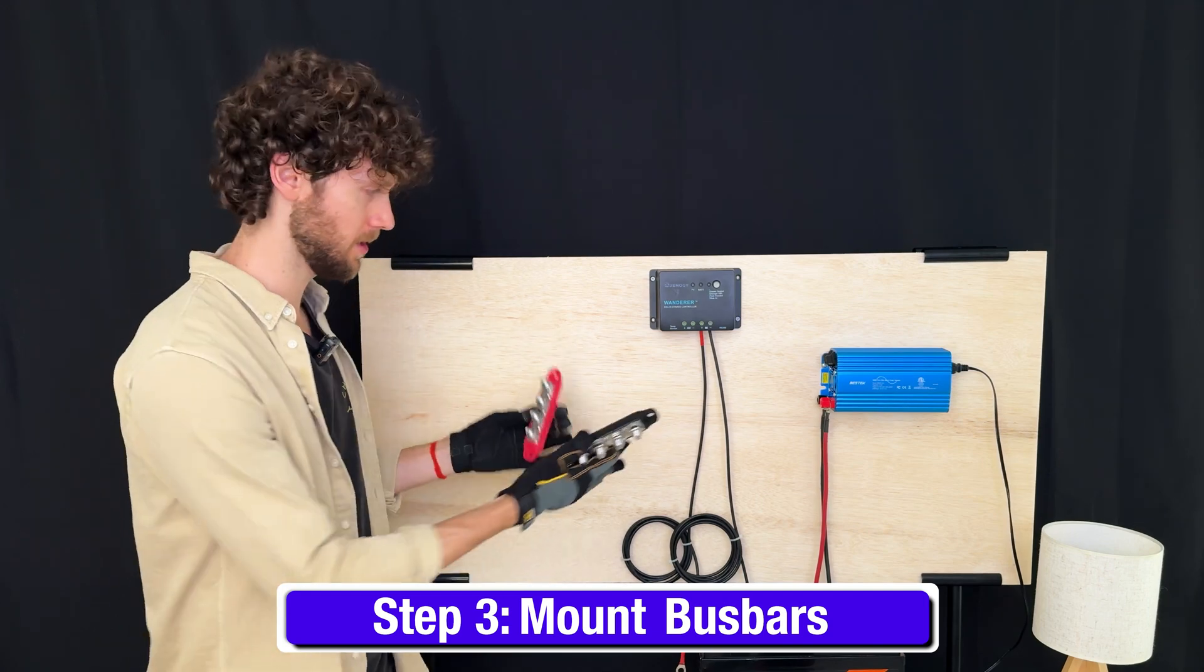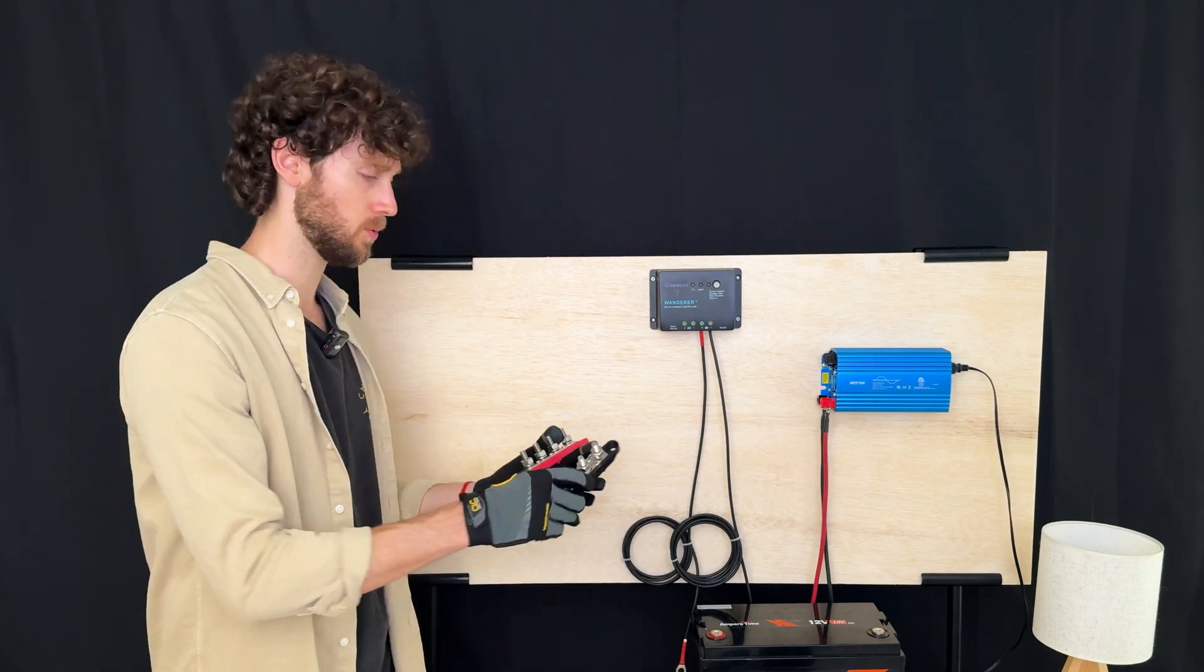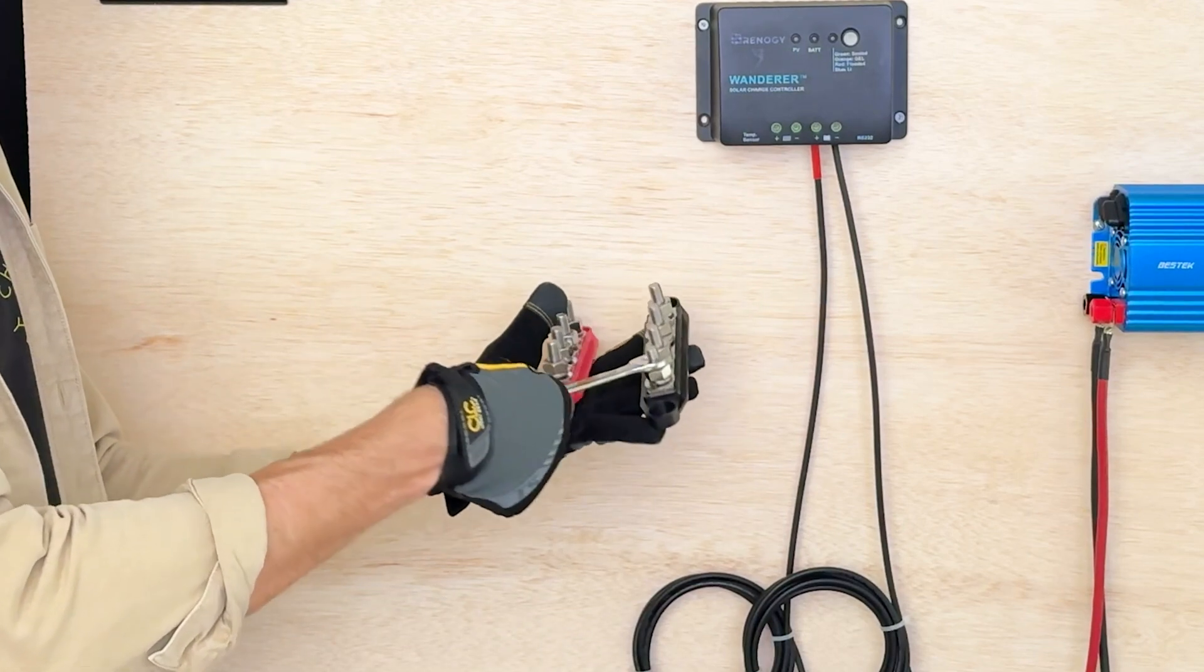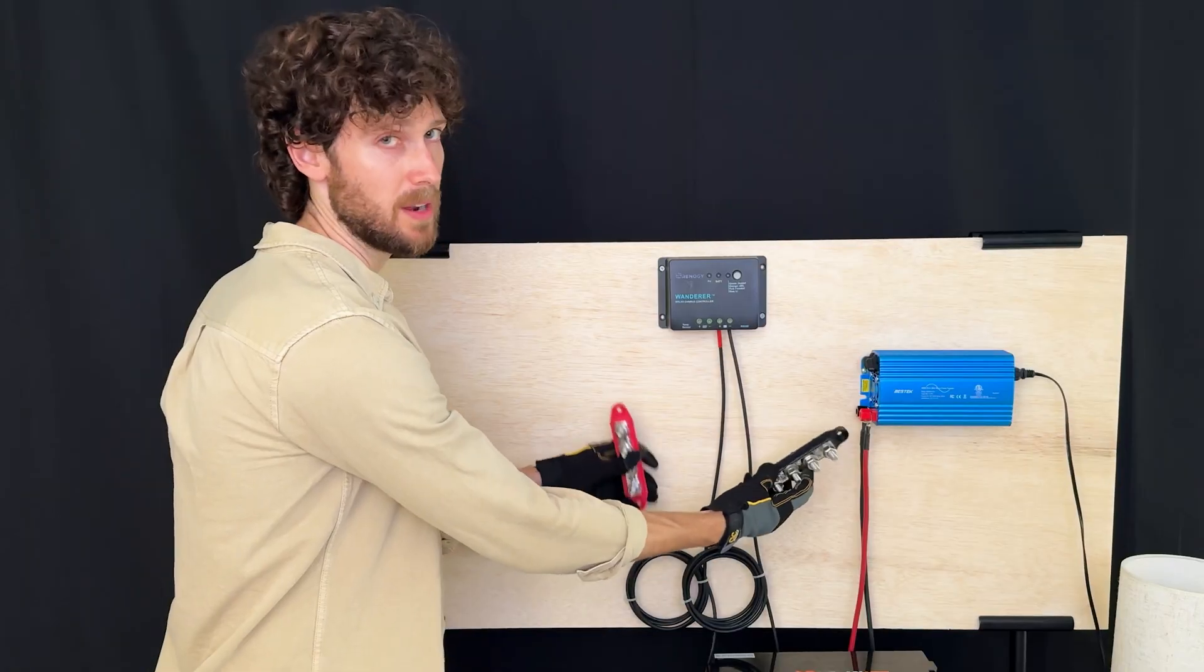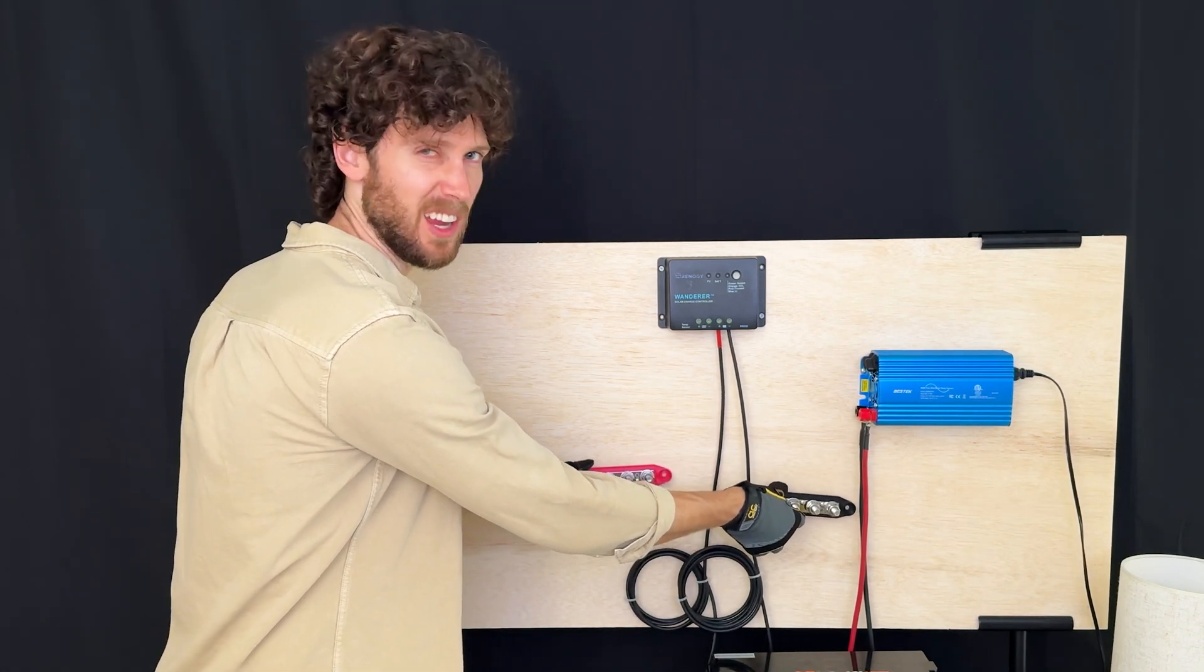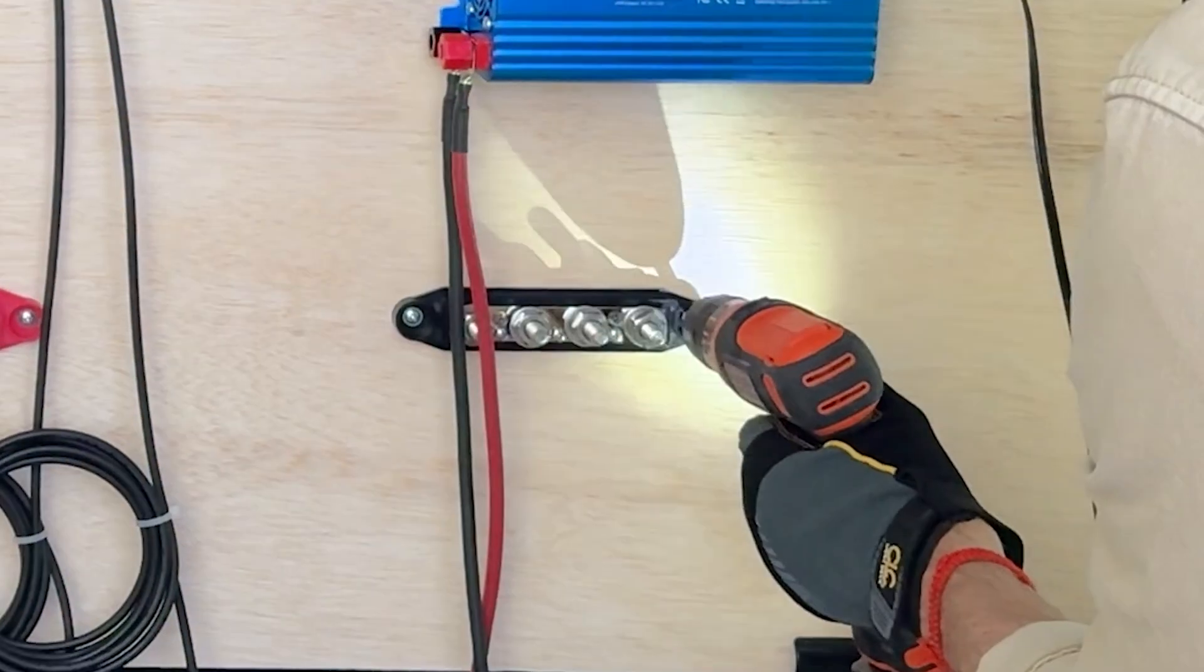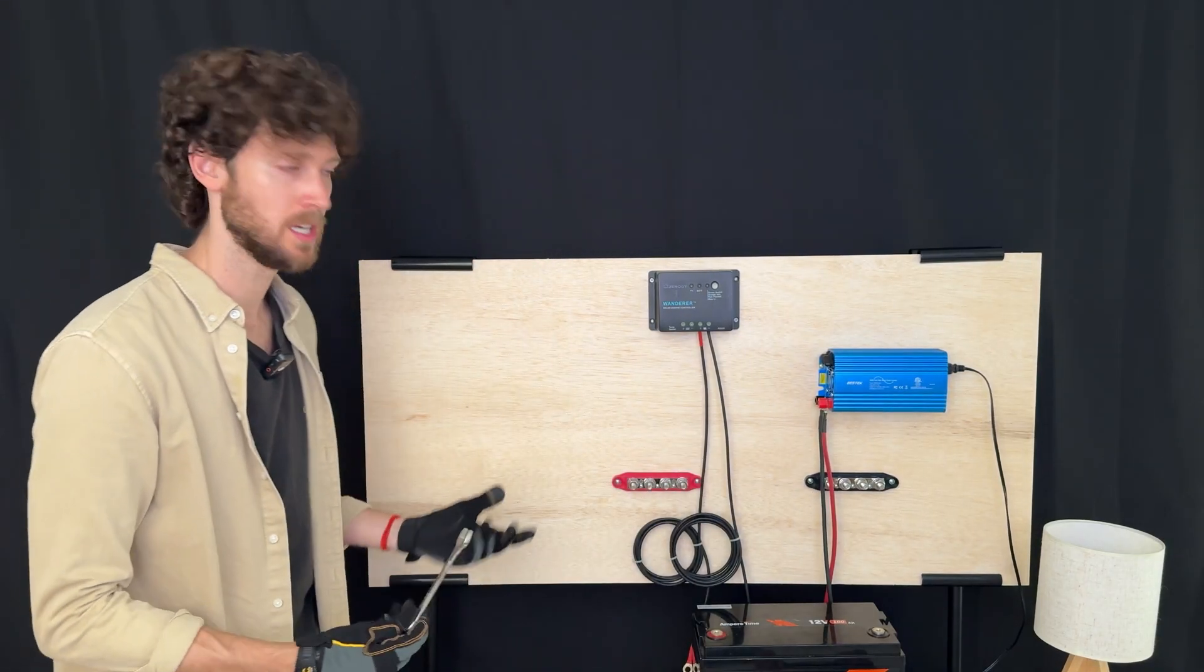Step three is to mount the bus bars to your mounting surface. So you can mount them wherever. You can mount them horizontally, vertically. The one thing I will say is mount them far enough apart that if you're ever working on your system tightening a bolt, that you don't accidentally short circuit your system. If you're unscrewing a bolt with a wrench or something and you touch metal to metal on the positive to negative end because these will be directly connected to the battery. So I'm going to mount them a little far apart just to prevent that from happening. I think I'm going to mount them horizontally, like right here. That looks good. Okay, they're mounted.